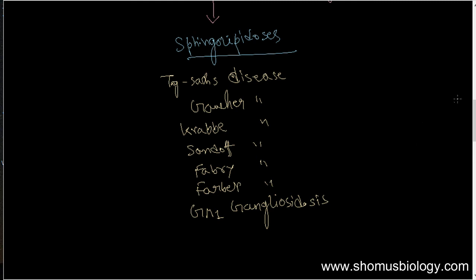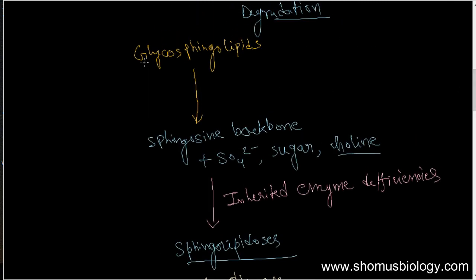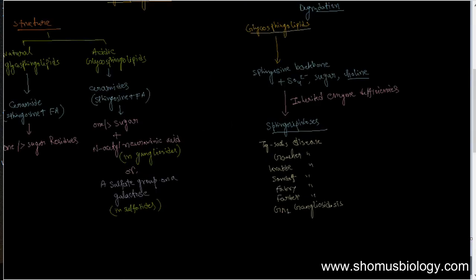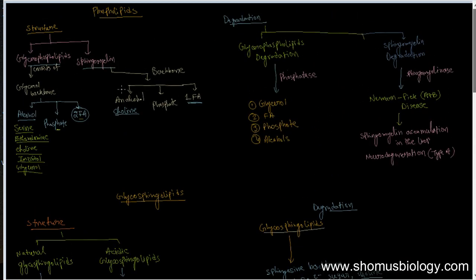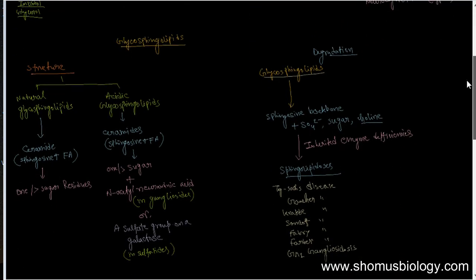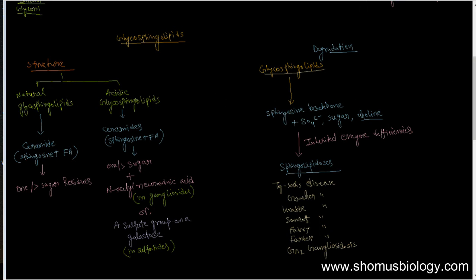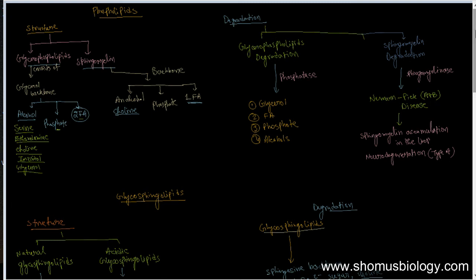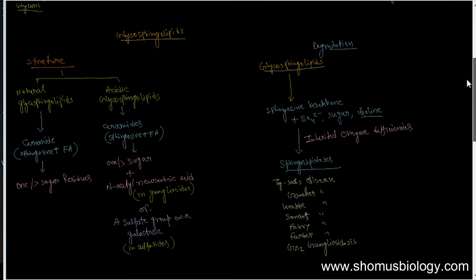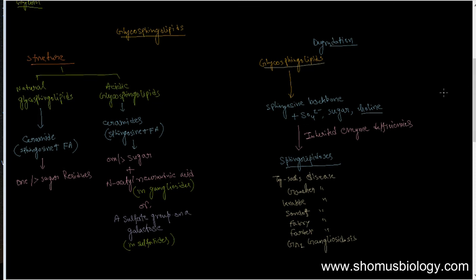These are the diseases caused due to the degradation of glycosphingolipids. In summary, we talked about the glycerophospholipid structure and degradation, the sphingomyelin structure and degradation, and the glycosphingolipid structure and degradation. If you like this video, please hit the like button, share it with your friends, and subscribe to our channel for more videos. Thank you very much, bye.